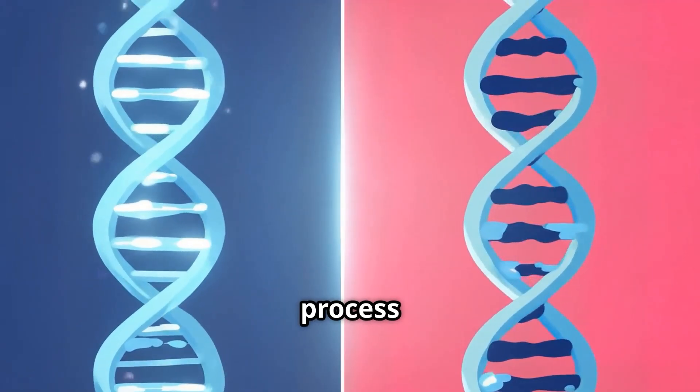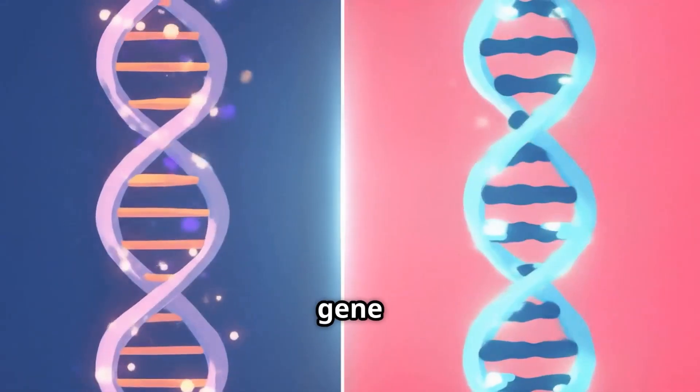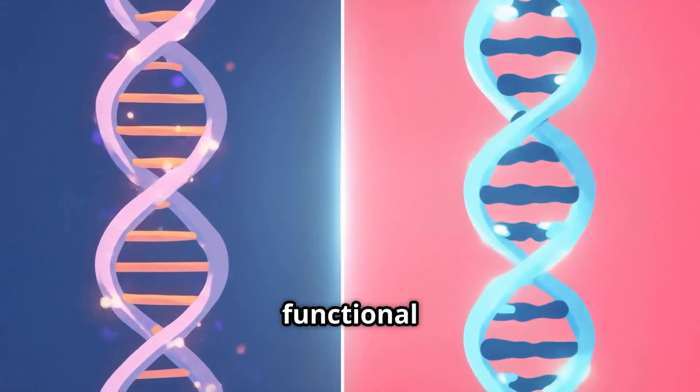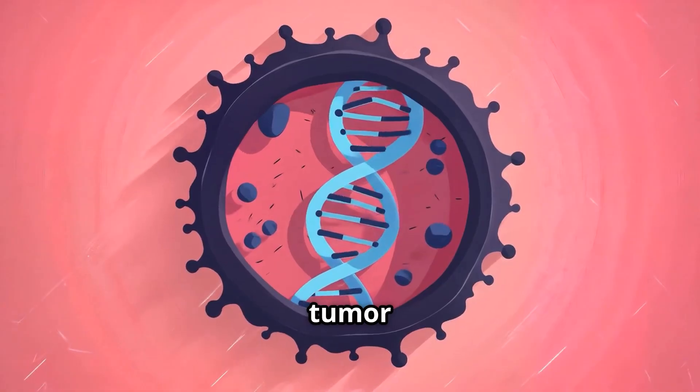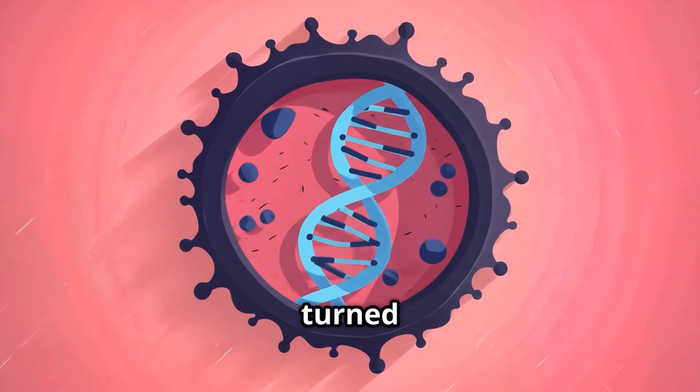Gene expression is the process by which the information encoded in a gene is used to direct the assembly of a functional product, typically a protein. In some cancers, tumor suppressor genes are methylated and turned off.